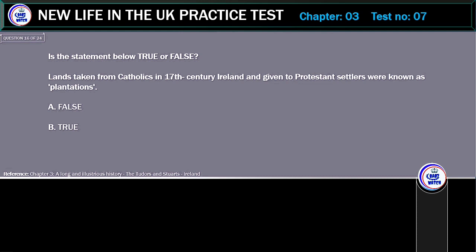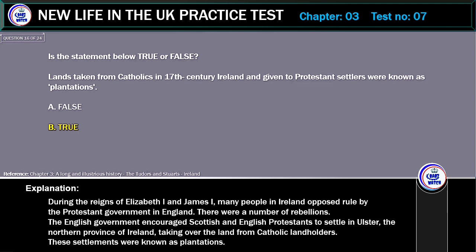Is the statement below true or false? Lands taken from Catholics in 17th century Ireland and given to Protestant settlers were known as plantations. A. False. B. True. Correct answer: True. Explanation: During the reigns of Elizabeth I and James I, many people in Ireland opposed rule by the Protestant government in England. There were a number of rebellions. The English government encouraged Scottish and English Protestants to settle in Ulster, the northern province of Ireland, taking over the land from Catholic landholders.